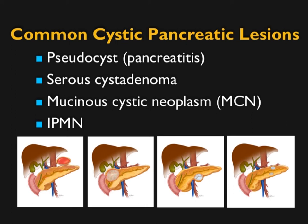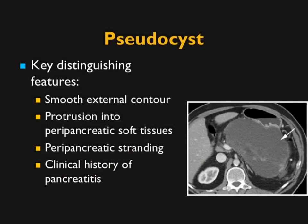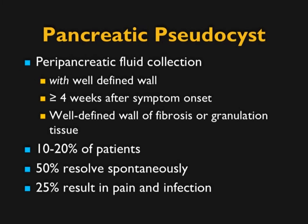Let's start with the cystic lesions we will see and can most often recognize. Pseudocysts: pancreatitis history is good. There's inflammation, usually smooth contour, and they protrude into areas like the anterior and posterior pararenal space or the lesser sac. Often there's a history of pancreatitis, and you may see glandular inflammation and stranding. Pancreatic pseudocysts are well-defined fluid collections, typically called a pseudocyst if present four weeks after onset of symptoms. Up to 20% of patients with pancreatitis develop pseudocysts. About half resolve spontaneously and about 25% will be symptomatic — whether fever, pain, or infection.